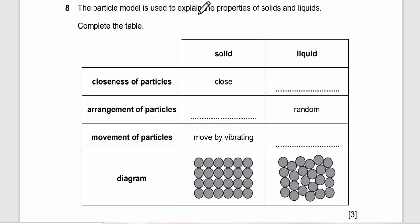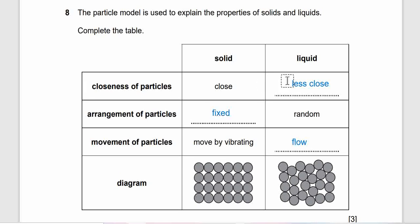Question 8: The particle model is used to explain the property of solids and liquids. Complete the table: closeness of particles - solid close and blank, arrangement of particles - blank and liquid random, movement of particles - move by vibrating, this is blank, diagram. Fill in the slots. Here's the answer. Closeness of particles is less close in liquid. Solid is very close. You can see close and less close. Arrangement of particles is fixed. You can see it's fixed region and this is random. Movement of particles - move by vibrating because solid particles are not free to move, but liquid can flow.